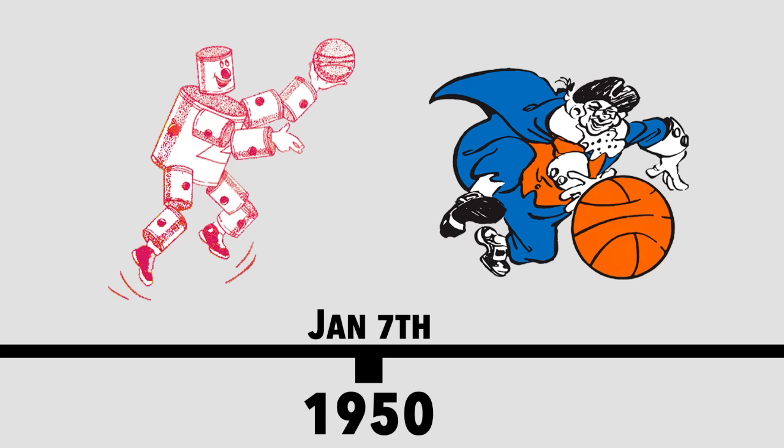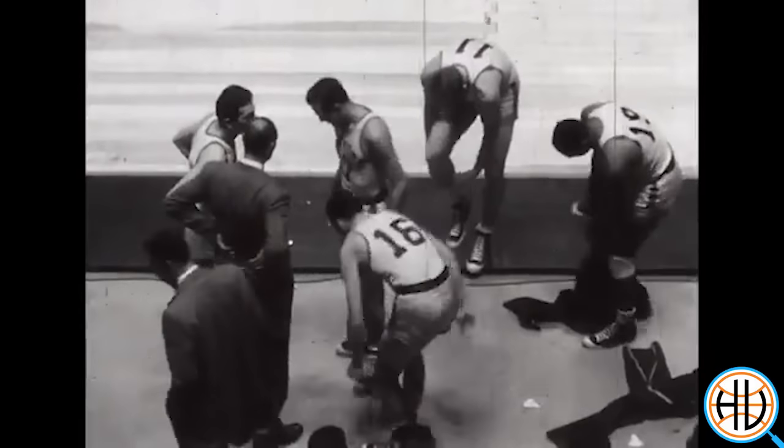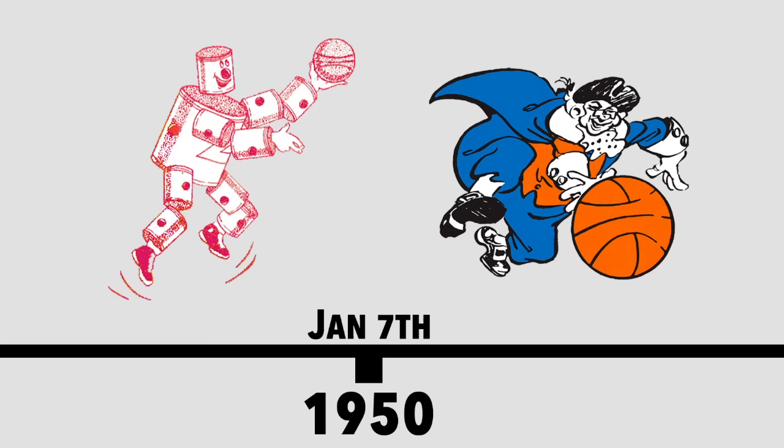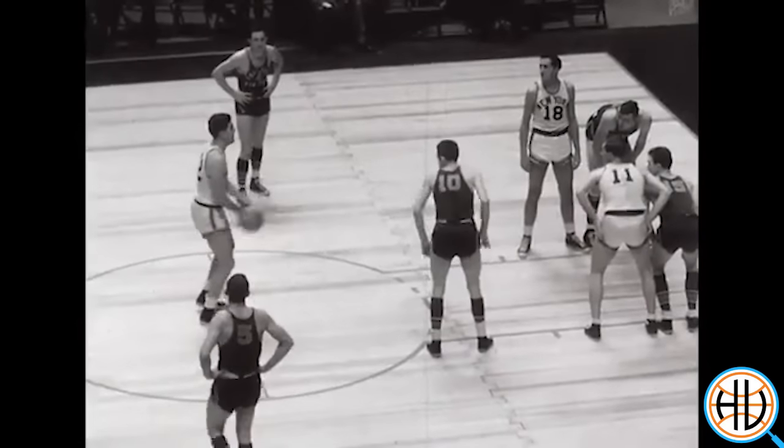Finding full game footage from the 50s isn't easy, but YouTube has the majority of a January 7th, 1950 matchup between the Fort Wayne Pistons and the New York Knicks. That was the first season the NBA was known as the National Basketball Association. The league was founded in 1946 as the Basketball Association of America, but changed its name prior to the 1950 season. The style of basketball back then was very different than it is now.